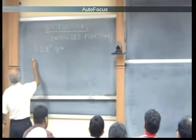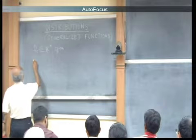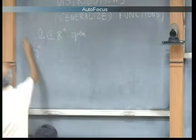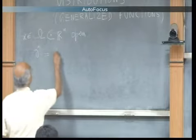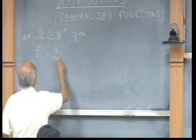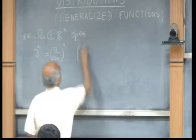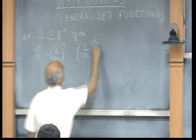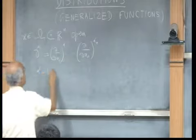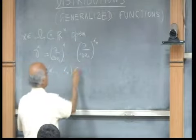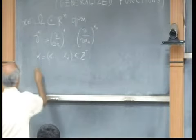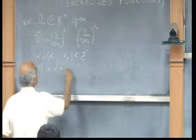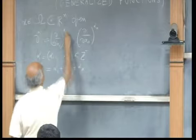Let me begin by introducing some more notation. These are the usual derivatives with respect to the variable x in omega. These are iterated derivatives, and alpha is a multi-index. The components of alpha are all non-negative integers, and the modulus of alpha is the total order of differentiation.